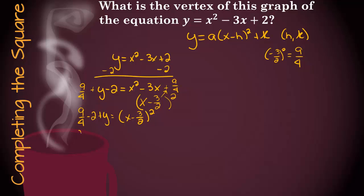So we're going to have 9 fourths minus 8 over 4 plus y equals x minus 3 halves squared.